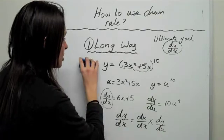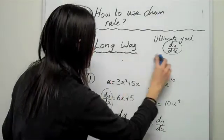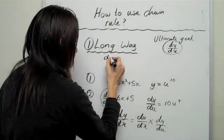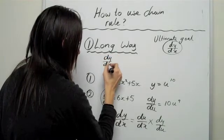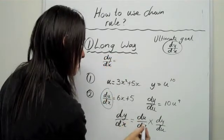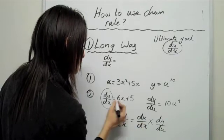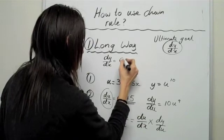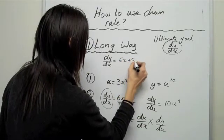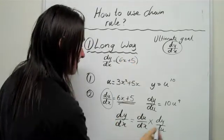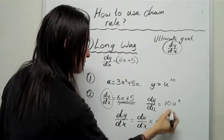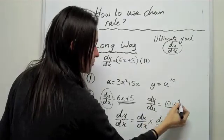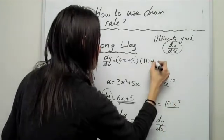So, let me show you how we're going to do this. So, let's just plug everything in. dy over dx is equal to du over dx, which is this here. So, it's equal to 6x plus 5. And then you times by dy over du. So, you times by 10u to the power of 9.